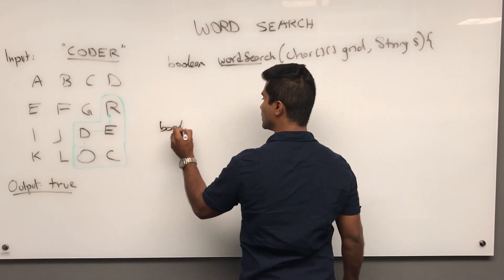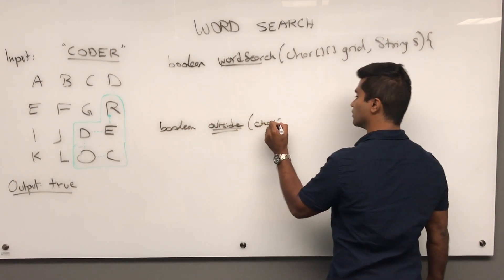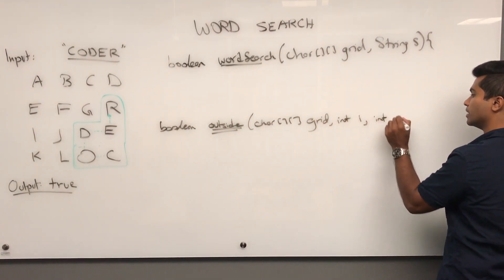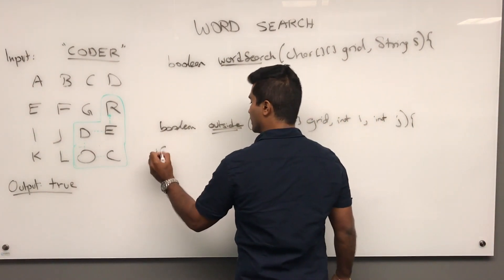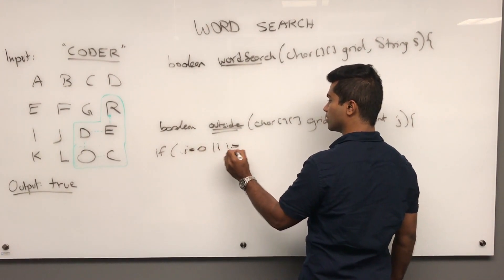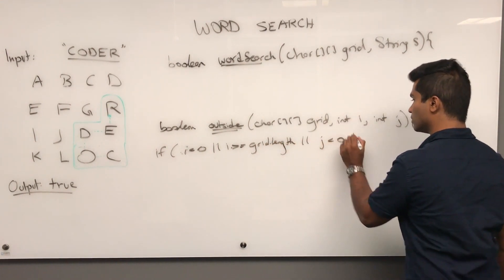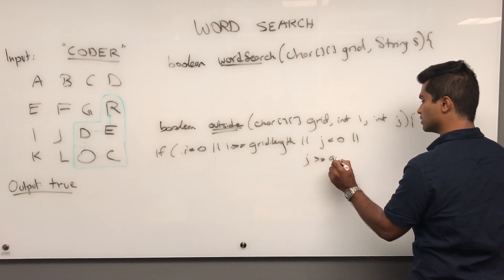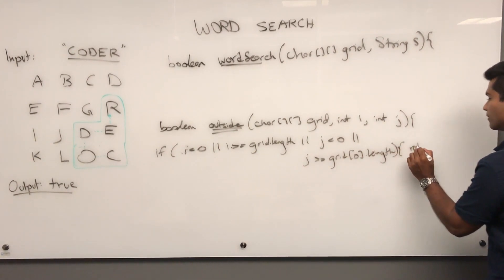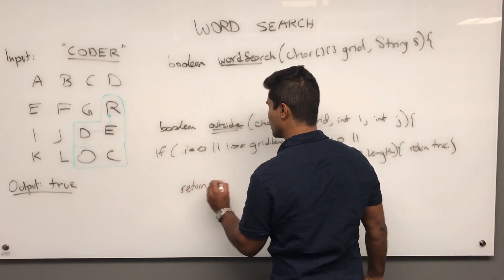The helper method looks like this: `boolean outside(char[][] grid, int i, int j)`. If i is less than zero or i is greater than or equal to `grid.length`, or j is less than zero or j is greater than or equal to `grid[0].length`, then we return true, meaning we're out of bounds. Otherwise we return false, meaning we're safe.